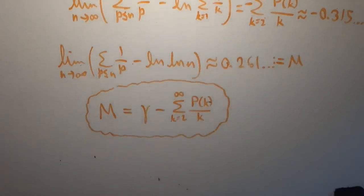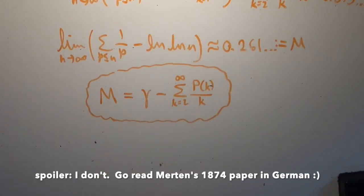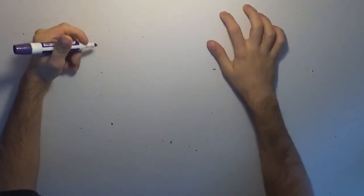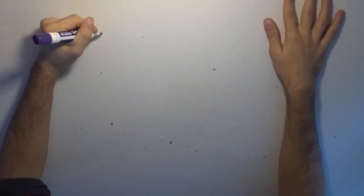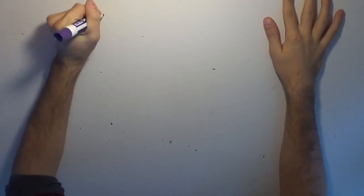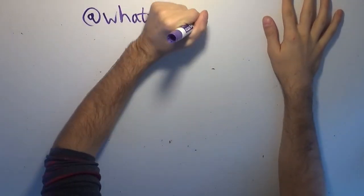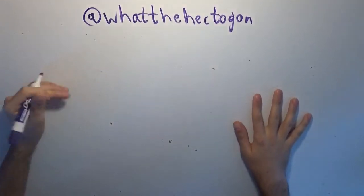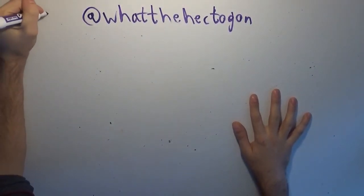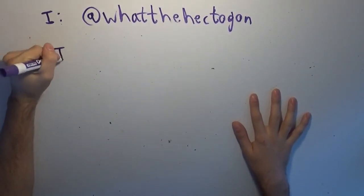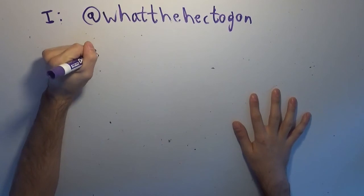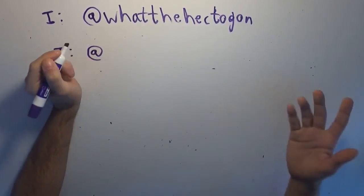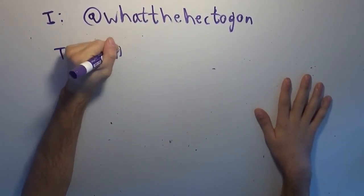So that's what I wanted to share. The n-th prime harmonic grows like ln(ln(n)), which is exceptionally slow, but still diverges. This channel has an Instagram and a Twitter, both at whatthehectagon, and my email is whatthehectagon at gmail.com — all in the description below.